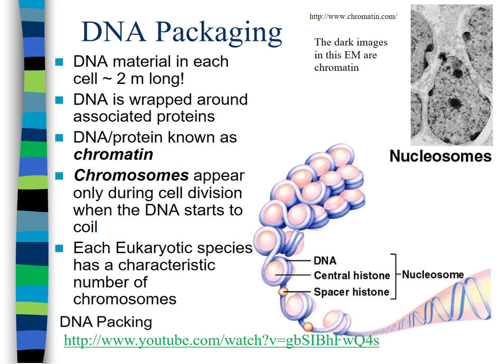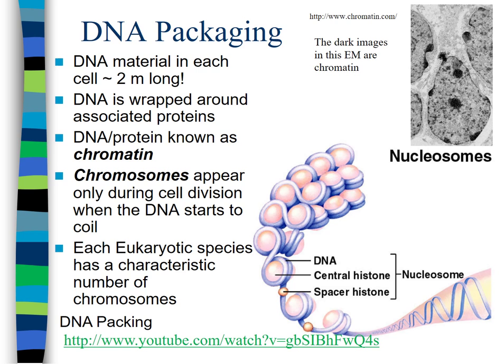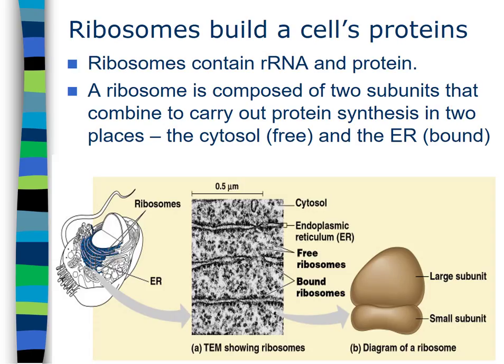The number of chromosomes doesn't really indicate the complexity of an organism. The nucleus also contains the nucleolus, where ribosomes are made. All cells have ribosomes, which are necessary to build proteins. Proteins are the workhorse of your cell — they play roles in transport across cell membranes, movement such as muscle, protecting your body against foreign invaders as antibodies, and catalyzing biological reactions as enzymes.